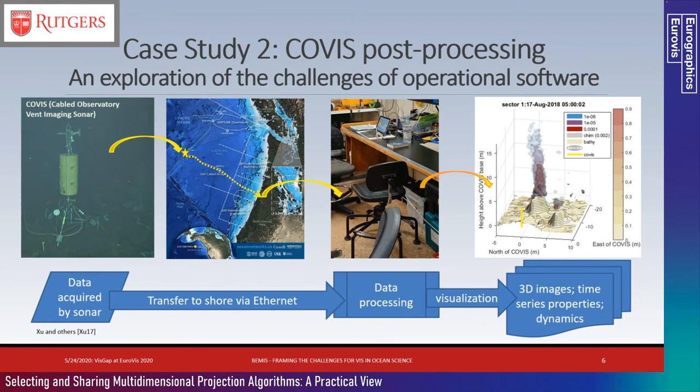This highlights two gaps between the visualization community and the domain science communities: the gap in adoption of ideas or algorithms, and the even greater gap in the use of implementations. The second case study looks at the COVIS instrument, a sonar platform on the bottom of the ocean connected via telecom cable to shore. COVIS looks at rising plumes of hot water near the seafloor. It acquires 8 to 24 datasets per day, 365 days per year. The data needs to be processed and visualized as it streams in as well as on demand.